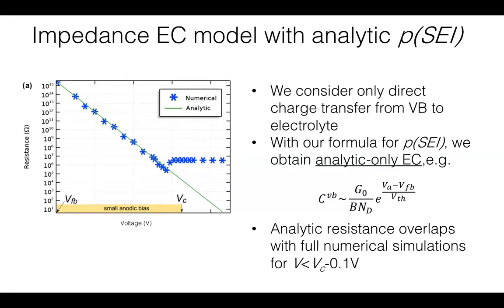for example, for capacitance only depending on the symbols or parameters without need to go into the diffusion simulations. On the left, we show that almost for the full small anodic bias range, we have good overlap of the numerically computed resistance with the analytically computed resistance.